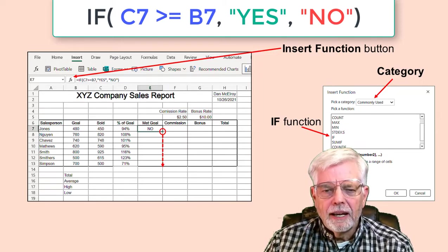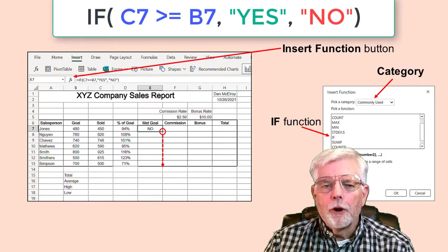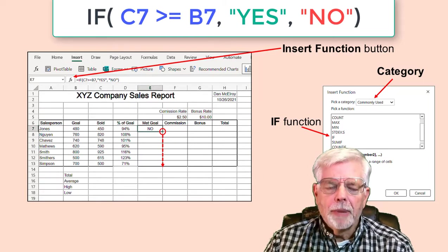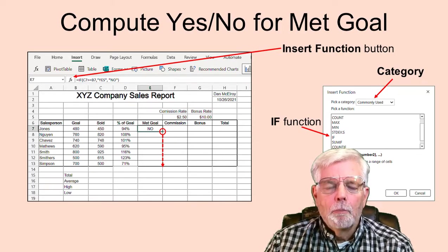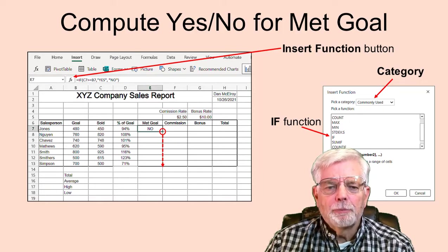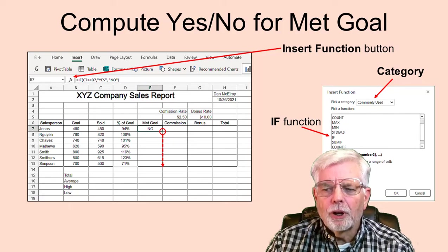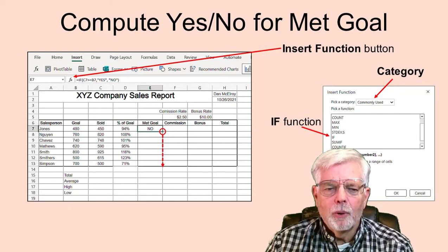Since the data I used for the first employee has not met the goal, the word 'no' should be displayed. Make sure that you have the E7 cell for the first employee's Met Goal selected. Move to the lower right corner to see the small plus sign. Grab the small plus sign with the mouse and drag it down to copy the Met Goal formula for the rest of the employees.